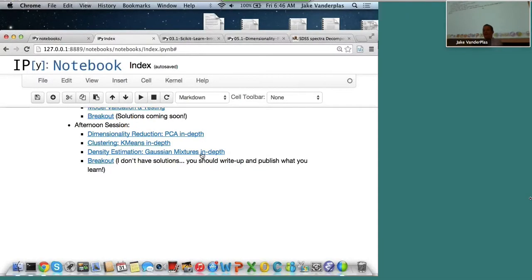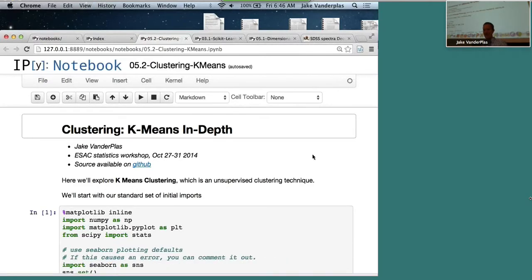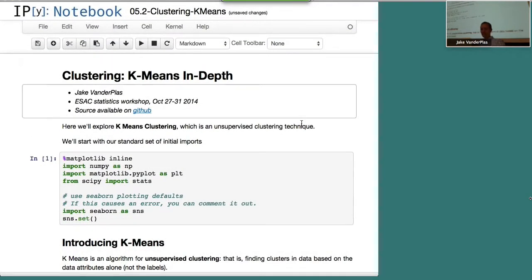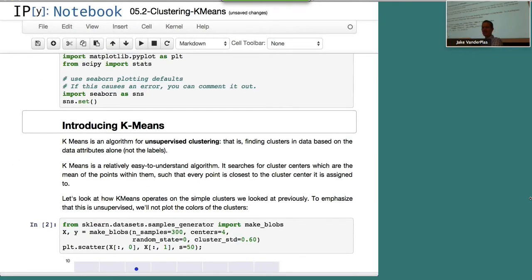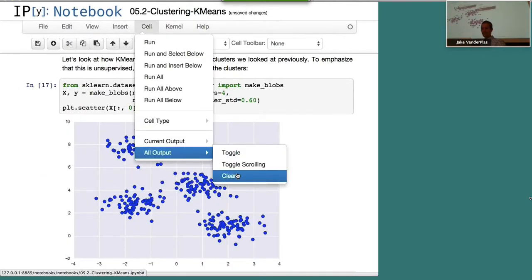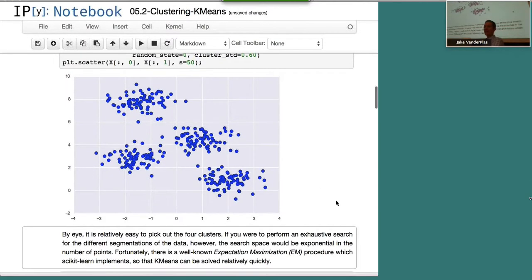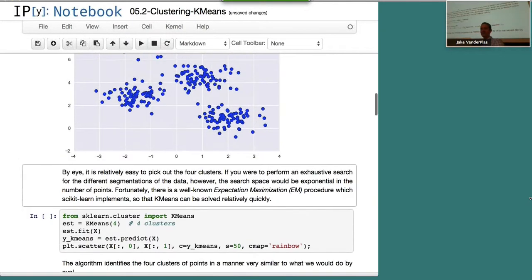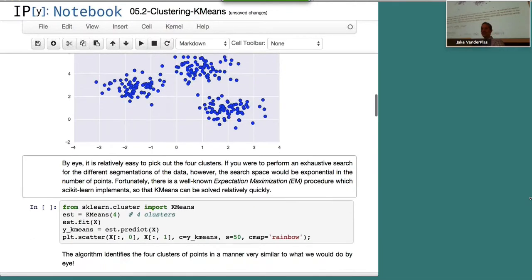The next thing we want to look at is clustering. So this is a completely different type of unsupervised learning. In this one, what we want to do is essentially, if we have some data that's unlabeled, it looks like this, we want to find these clumps in an automated fashion. We can kind of look at this by eye and see that there's a clump here, there's a clump there, there's a clump there, there's a clump there. And we want to know if we have an algorithm that can find these clumps by itself without us having to tell the algorithm where it is.